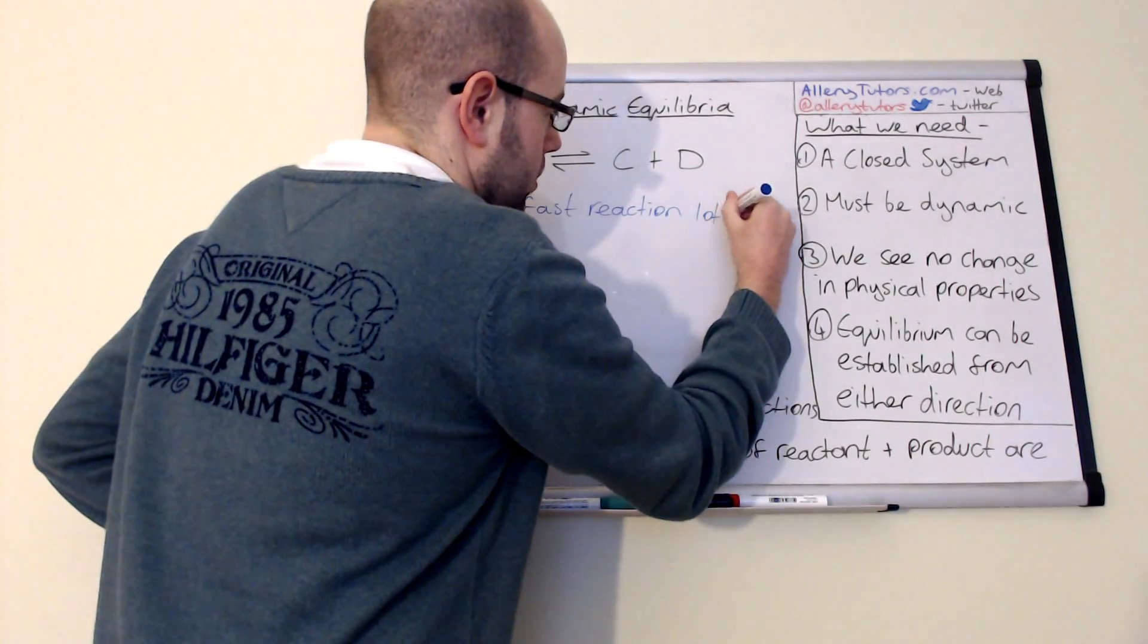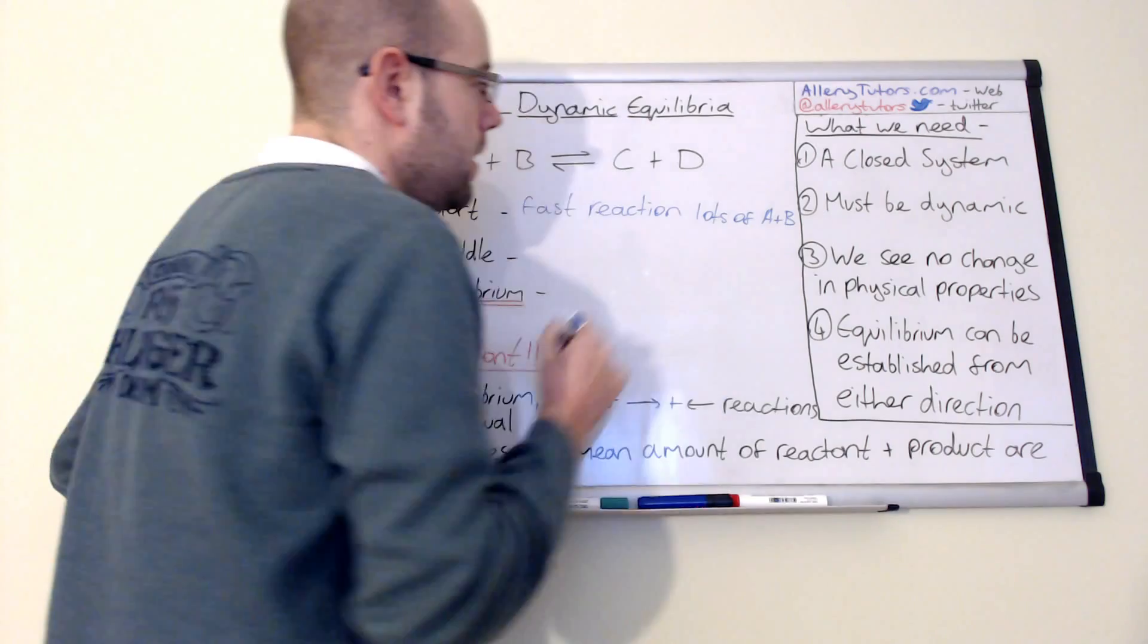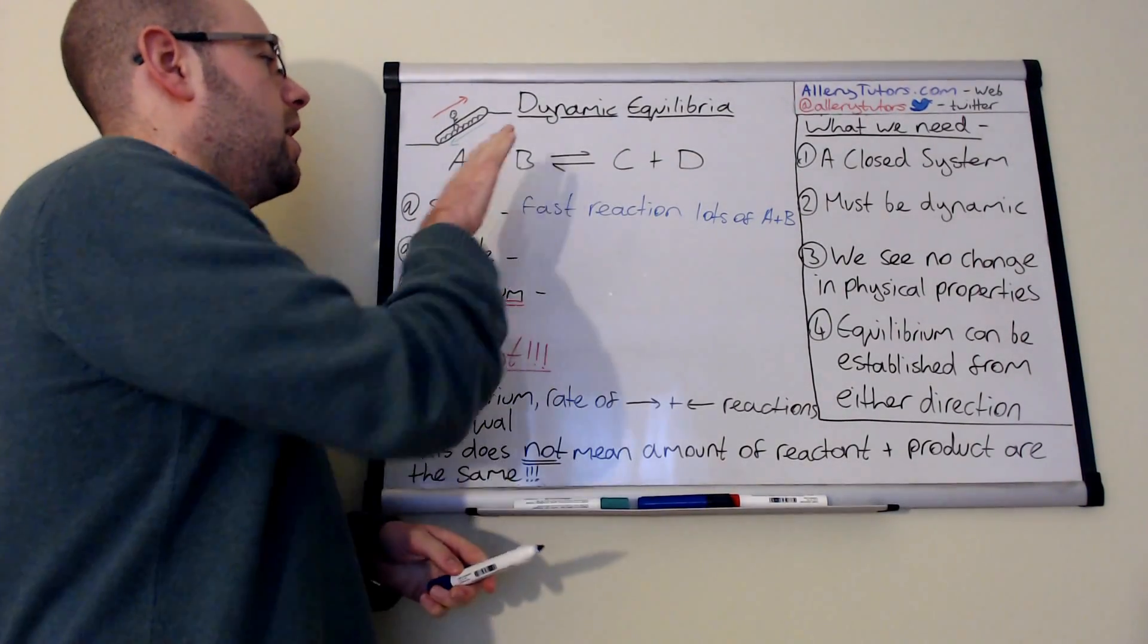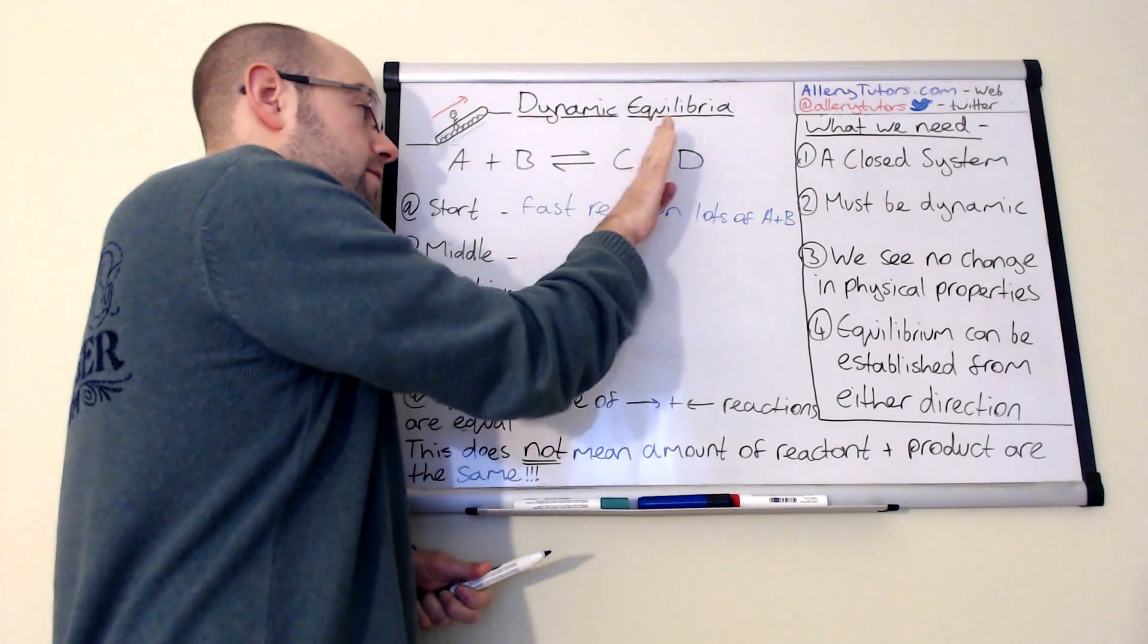And that's because you have lots of A and B. Equilibrium in this case will actually, the reaction will actually push towards the forward direction.